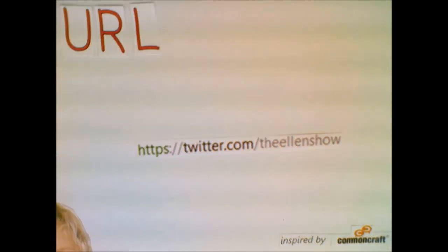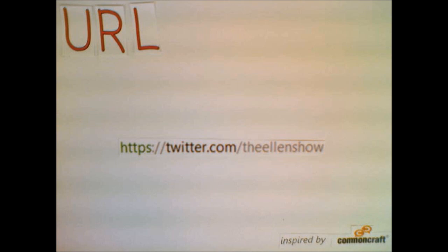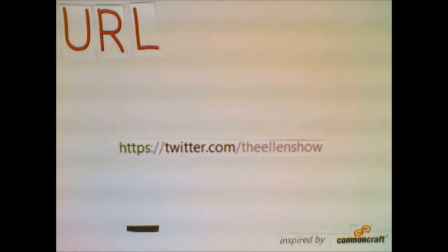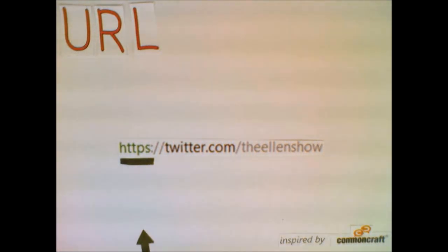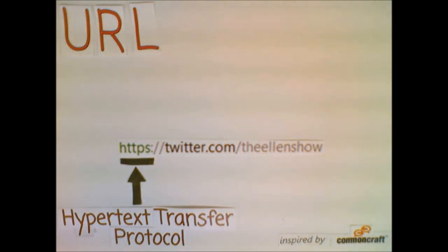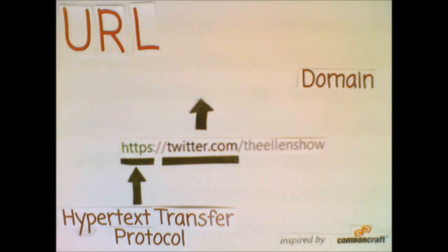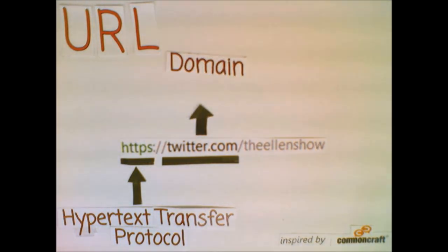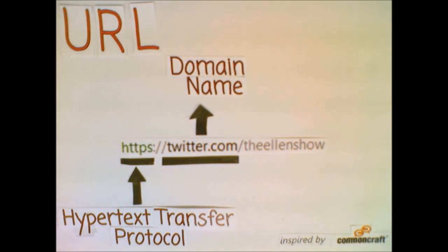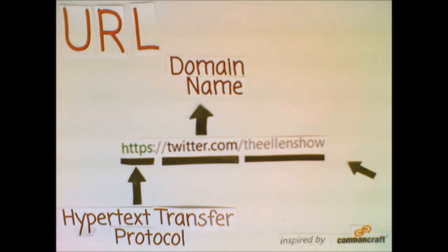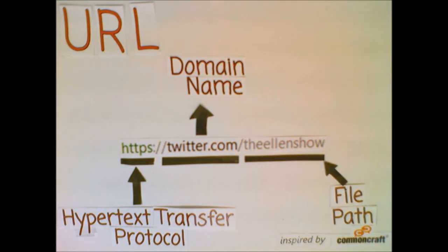There are three parts to a URL. The first is hypertext transfer protocol, which indicates a particular type of resource and allows access to web pages on hypertext. Next is the domain name, which is the address of the specific computer where the resource is located, hence leaving the file path, which leads to the file being retrieved and is typically separated by a forward slash in the URL.